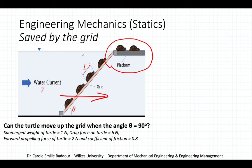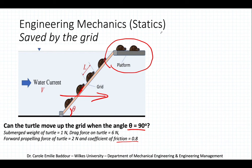The first question we want to answer is: can the turtle move up the grid if the angle theta with the horizontal is 90 degrees? We're given the submerged weight of the turtle, the drag force from the water, the turtle's forward propelling force, and the coefficient of static friction. We'll start with a free body diagram on the turtle, taking the grid as vertical at 90 degrees to the horizontal.